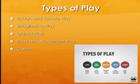Looking at types of play, there are two classifications shown here. One includes: rough and tumble play, imaginative play, object play, body and movement play, and games. The other includes: active play, make-believe play, manipulative play, creative play, and play for learning. If you look at them side by side, active play correlates to rough and tumble play, make-believe to imaginative play, and so on — the same concepts just given different names by different authors.